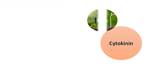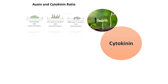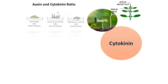Cytokinin is a growth promoter that favors cell division and differentiation. In tissue culture, a high cytokinin-to-auxin ratio favors shoot formation, while a low cytokinin-to-auxin ratio favors root formation. Cytokinin is antagonistic to auxin's activity: while auxin favors apical bud dominance, cytokinin favors lateral bud growth, thereby inhibiting apical bud dominance.